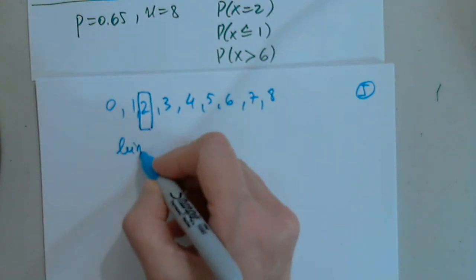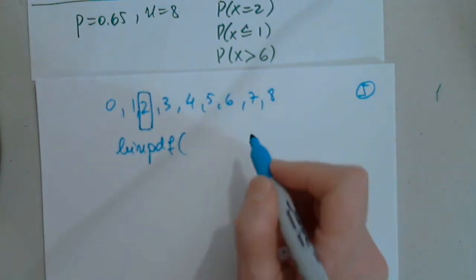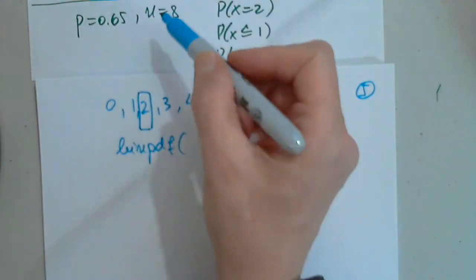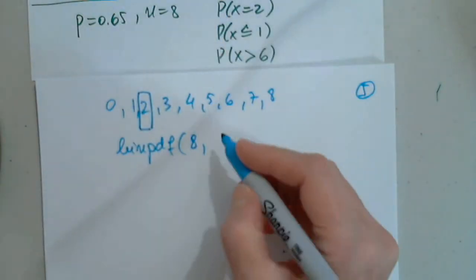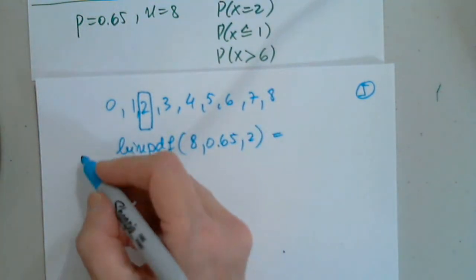That's a binomial PDF, just one element, with n, p, and x. n is 8, p is 0.65, x is 2. And we will determine this in part a.